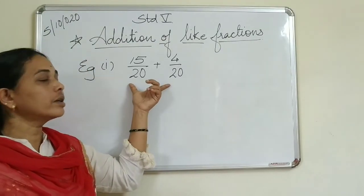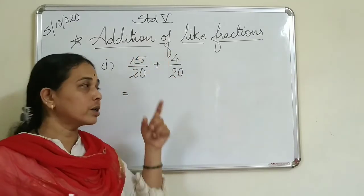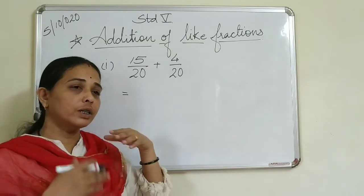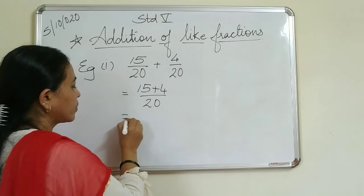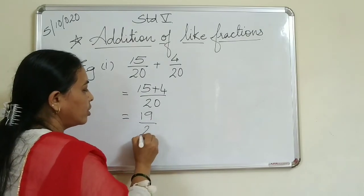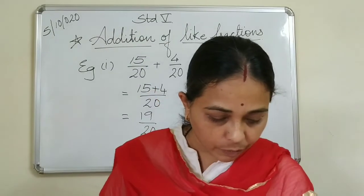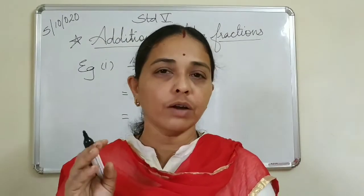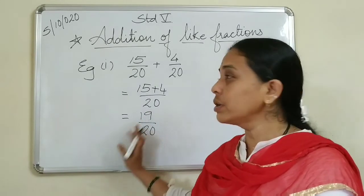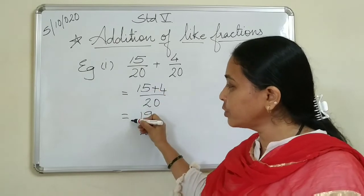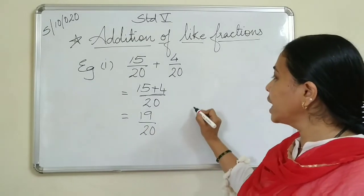Two like fractions are given and we have to add them. How to add them - it is so easy. Only add the numerator, don't add the denominator; don't make that mistake - you are not cutting the parts. Only add the numerator: 15 plus 4 upon 20. Fifteen plus 4 is 19 upon 20 - we got the answer 19 upon 20. You have to try the addition exercise in problem set 20. Write it in this pattern with the equals sign underneath, and separate numerator and denominator properly.